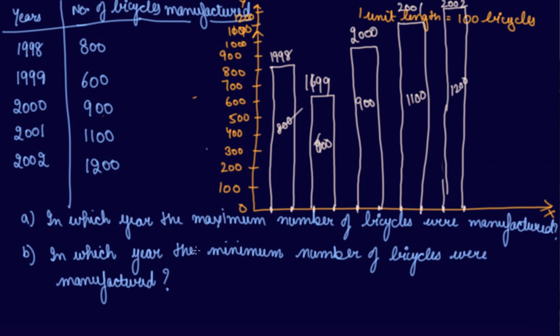Now the question is, in which year the maximum number of bicycles were produced? Can you see the highest bar graph is this one? So your highest bar graph is this one. So in which year the maximum number of bicycles were produced? 2002.